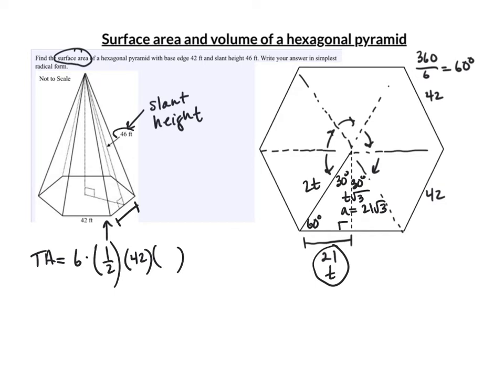times the height of one of those triangles. And the height of the triangle is the slant height. So it's 46. Plus, we just need to add in the hexagon, which is one half the apothem, 21 root 3, times the perimeter. And the perimeter would be 42 times 6, which is 252.